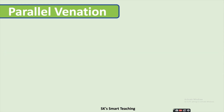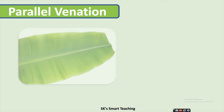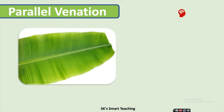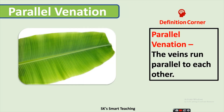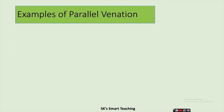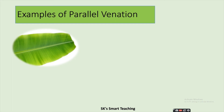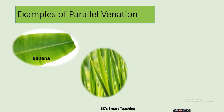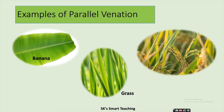In parallel venation, the veins run parallel to each other. Such leaves are said to have parallel venation. The leaves of plants such as banana, grass, and wheat have parallel venation.